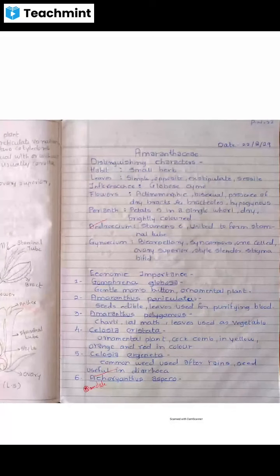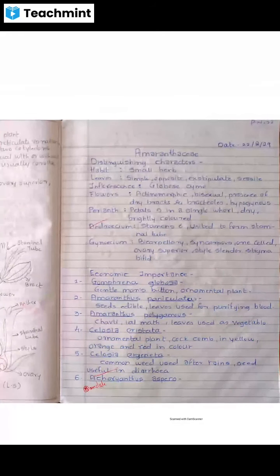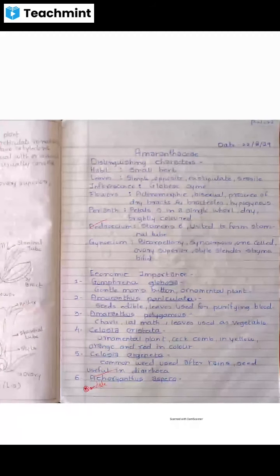Perianth is present — meaning petals and sepals are fused and cannot be differentiated. Petals five in a single whorl, dry, brightly colored in the Amaranthaceae family. Androecium: six stamens united to form a staminal tube.